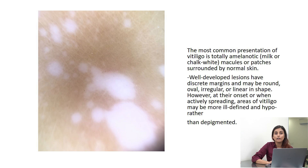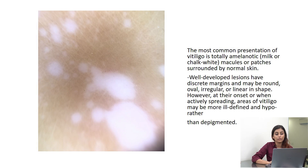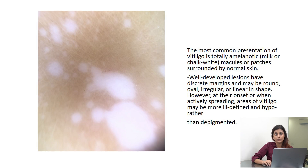If you talk about vitiligo, in vitiligo we have chalky white hypopigmentation — the areas are completely white. Besides that, they'll have a good border or boundary which we can clearly demarcate. It can be irregular, linear, round, or oval, but we will be able to clearly demarcate it.